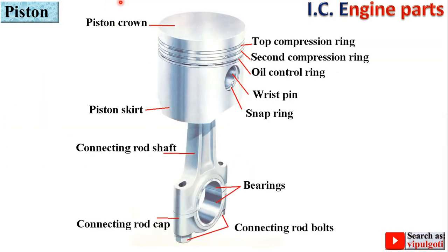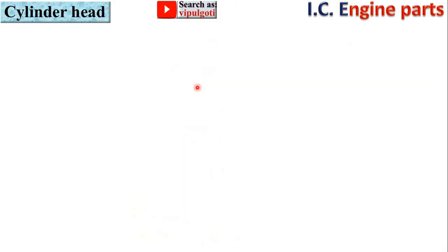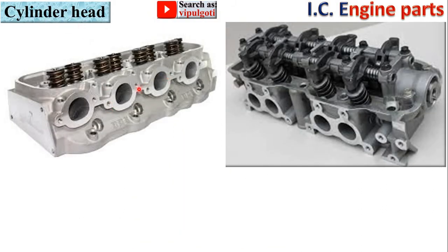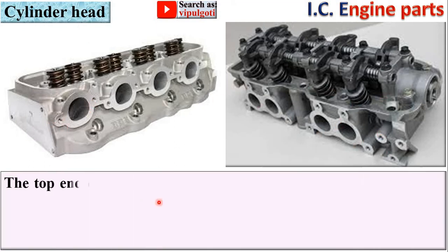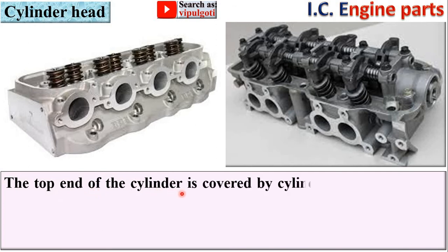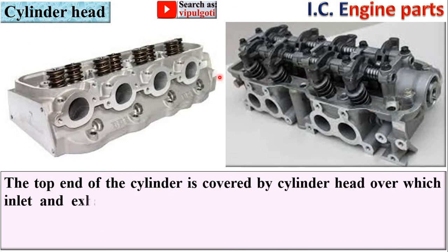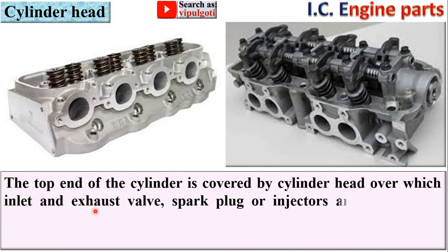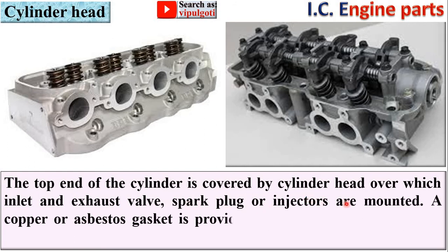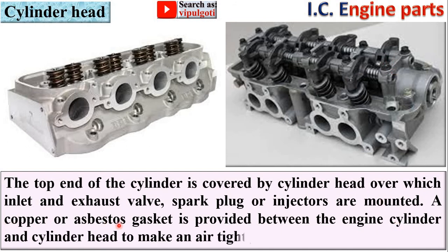The piston is usually made of aluminum alloy, which has good heat-conducting properties and greater strength at higher temperatures. Next part: cylinder head. Here you can see the cylinder head — the top end of the cylinder is covered by the cylinder head, over which the inlet and exhaust valves, spark plug, or injectors are mounted. A copper or asbestos gasket is provided between the engine cylinder and cylinder head to make an airtight joint.